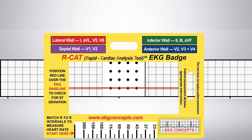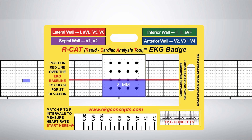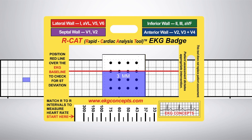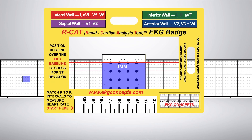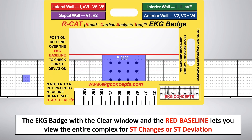Here we'll illustrate measuring electrical amplitude using the EKG badge. The EKG badge, with the clear window and the red baseline, lets you view the entire complex for ST changes or ST deviation.